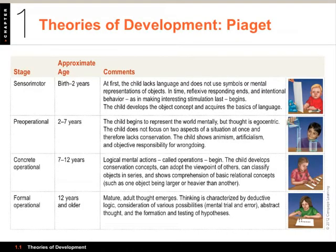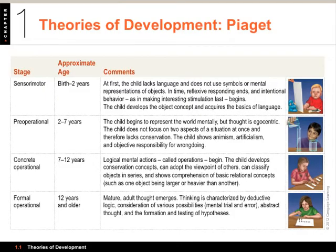From 7 to 12 — the rest of the K through 6 years — you have concrete operations, where logical mental actions begin. Children develop conservation concepts: if you squish Play-Doh flat, they know it's still the same amount. They can better adopt the viewpoint of other people, classify objects in series by recognizing patterns, and show comprehension of basic relational concepts — one thing being larger, heavier, faster, or slower than another.